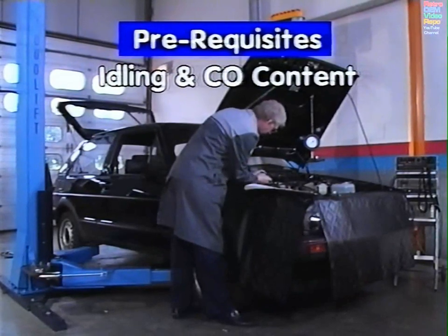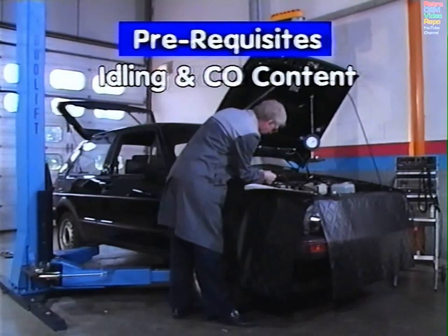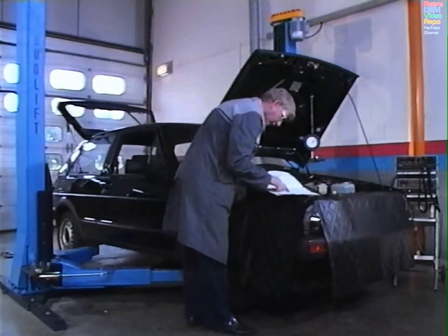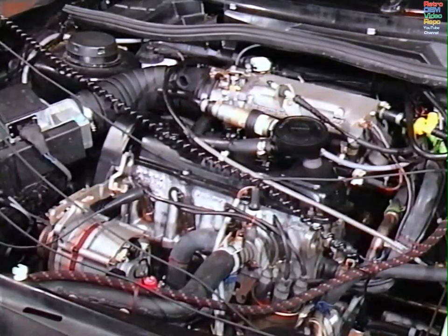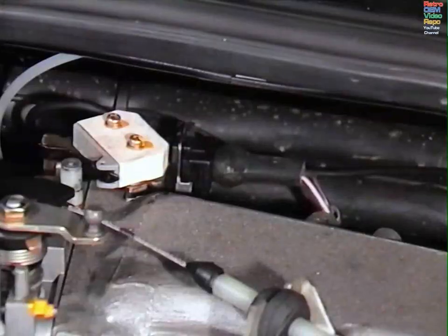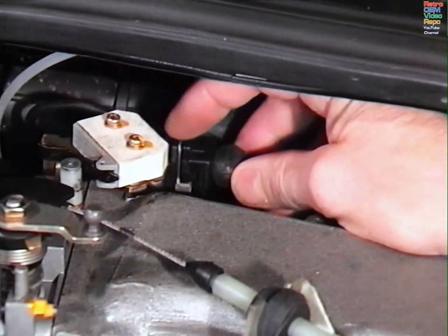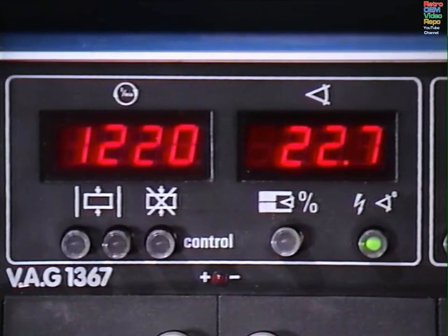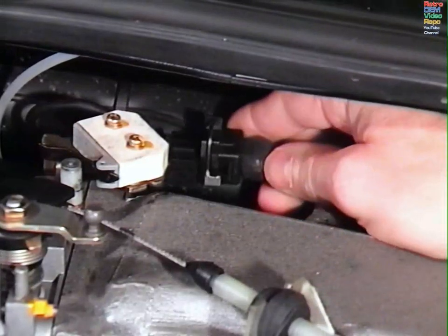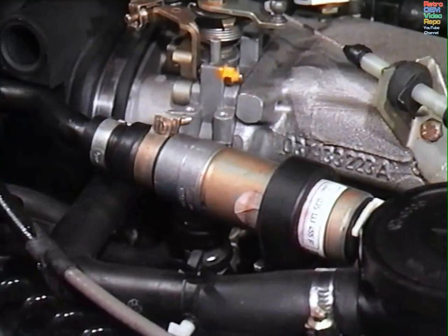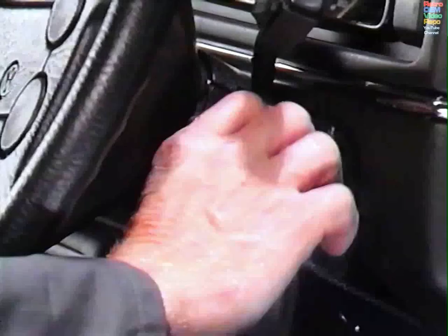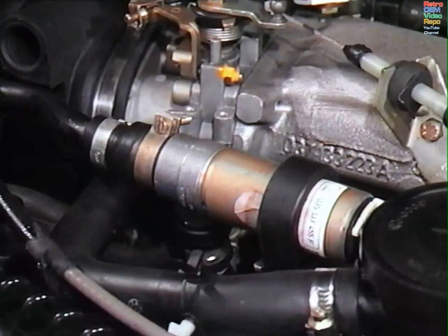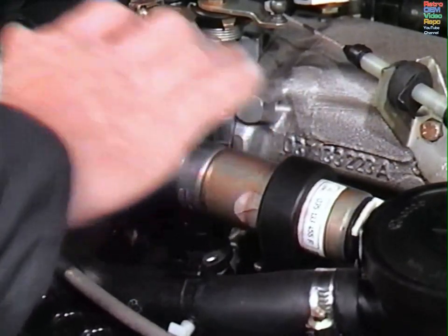Prerequisites for idling and CO content. Once again, the engine must be at normal operating temperature and at idling speed. All electrical consumers must be switched off and the fan must not be running during adjustments. First, do a quick check on the throttle valve switch. Disconnect this plug. The ignition timing point and idling speed should change. Now replace the plug. Finally, check the idle stabilization valve. Switch off the engine. Then turn on the ignition only. The valve should buzz and you should be able to feel a vibration through the valve.